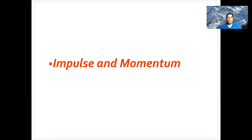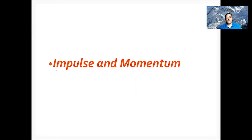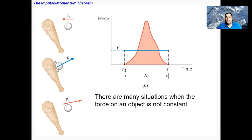We further need some more quantities to describe the motion of an object. So in this lecture I'm going to talk about mainly two new quantities: impulse and momentum.